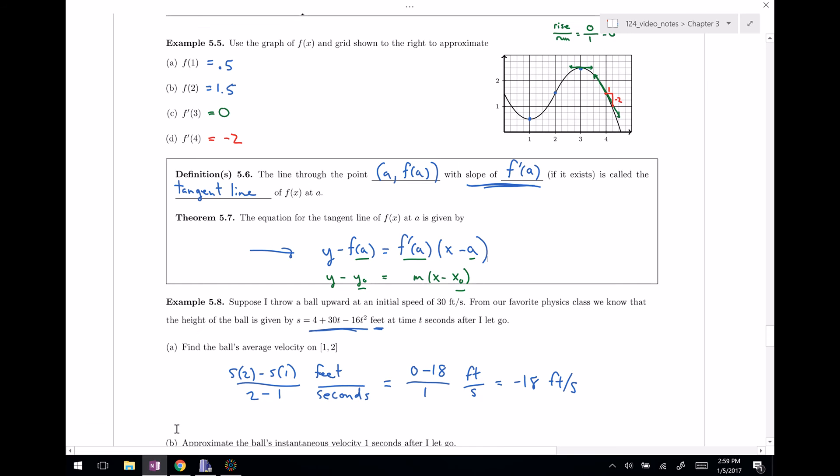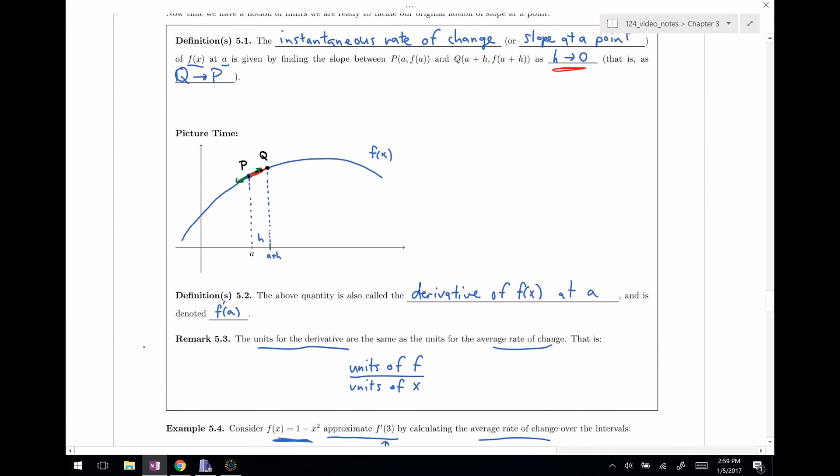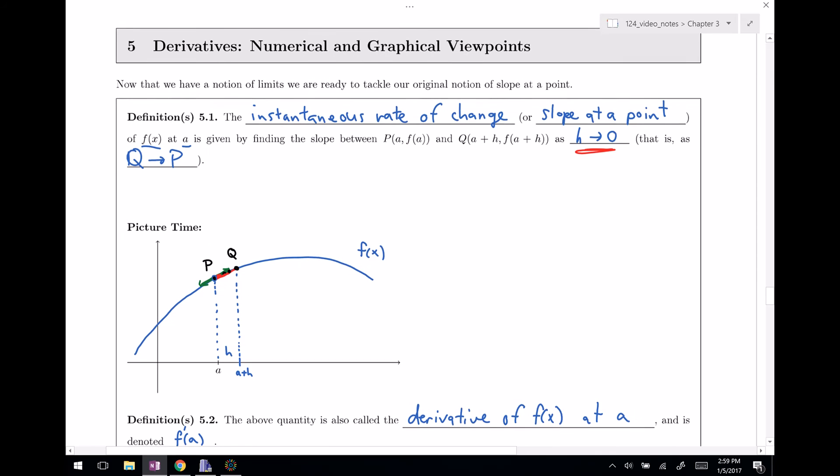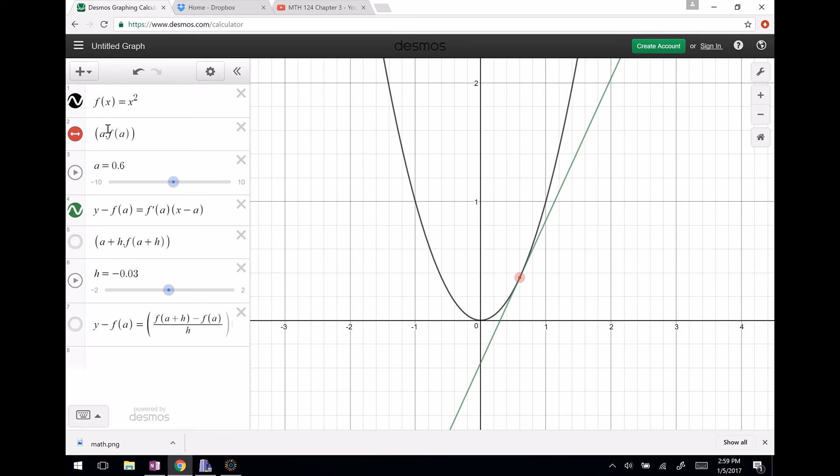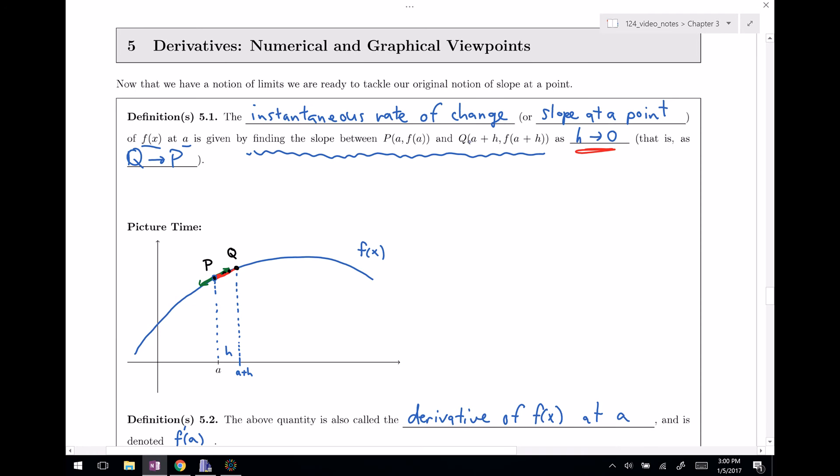So now let's go back. And the claim was that in order to get what that instantaneous rate of change is, or in order to get what the slope of that point is, or that we've called that also the derivative or the slope of the tangent line, there's lots of names, the claim is we wanna find the slope between these two points. So our point that we're interested in is (a, f(a)), so that in our case is this red point (a, f(a)), and this other point, this point Q, which is a lot like (a, f(a)), but there's these little extra h's. Because the slope formula doesn't work with just one point, we need a secondary point.